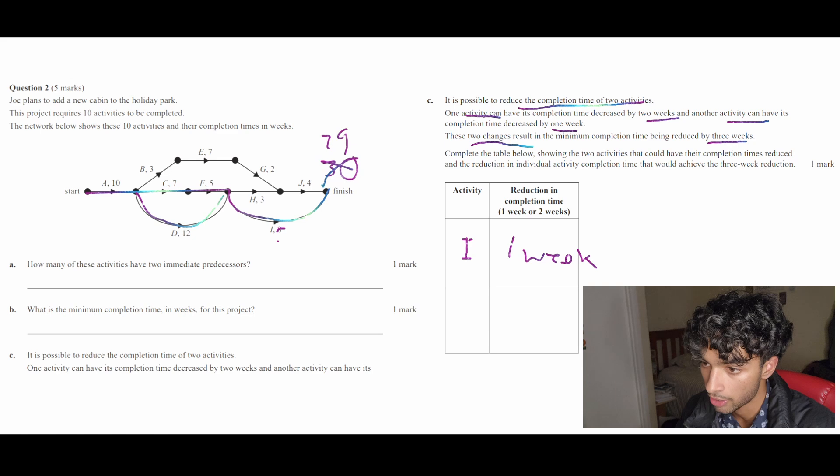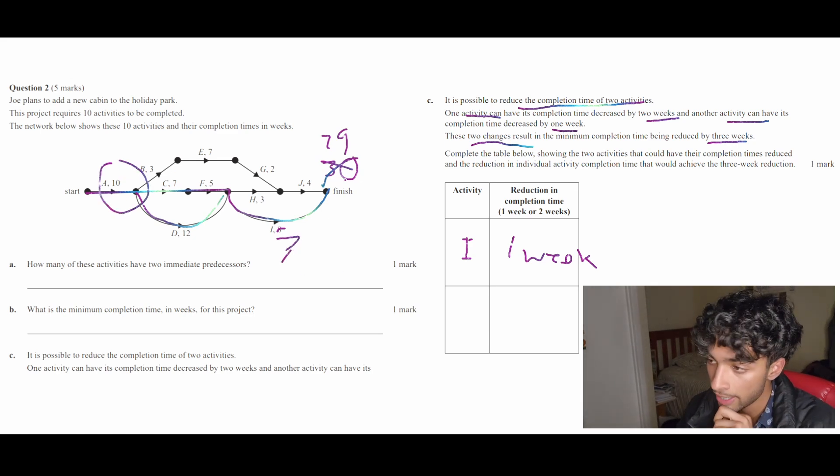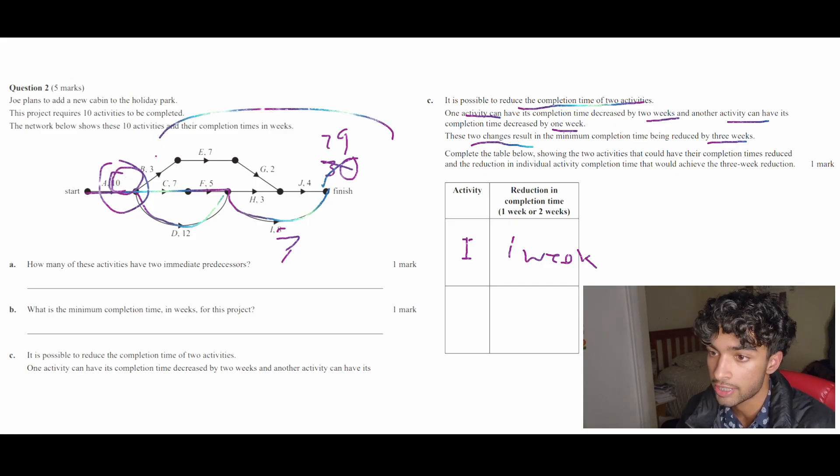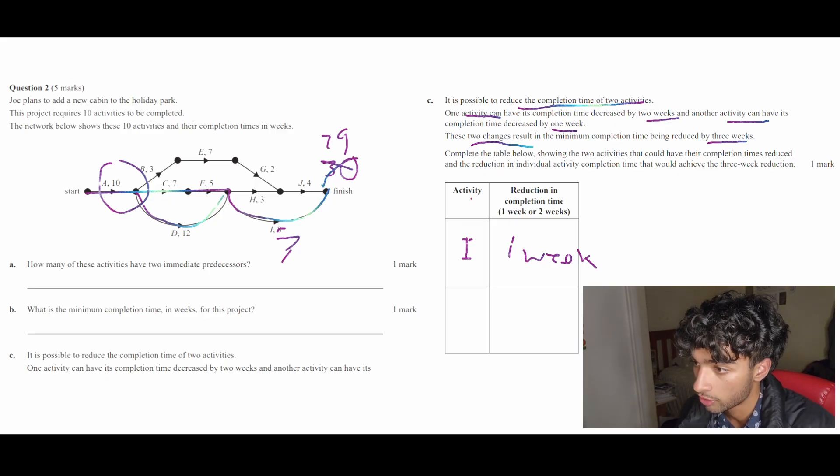So right now it's 29 and I at 7. Well, obviously this start right here at activity A, we can reduce this however much we want and it'll reduce the entire thing because it's the start and everything is connected starting from A. So we can put in A, activity A, and reduce it by two weeks.